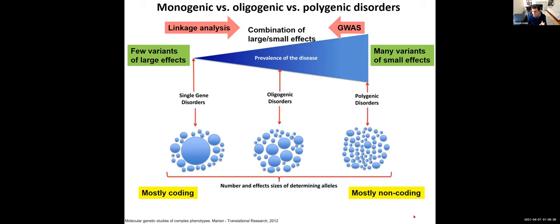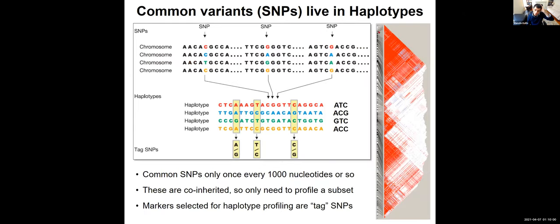There's an inherent selection against common strong-effect variants in the human population, leading to a dichotomy between Mendelian variants that are not allowed to rise to high frequencies, and common variants that are not allowed to be high effect size. Common variants fall in haplotype blocks, where a particular common variant is co-inherited with many others in the same block, making it difficult to infer which of sometimes hundreds of variants is the causal one.